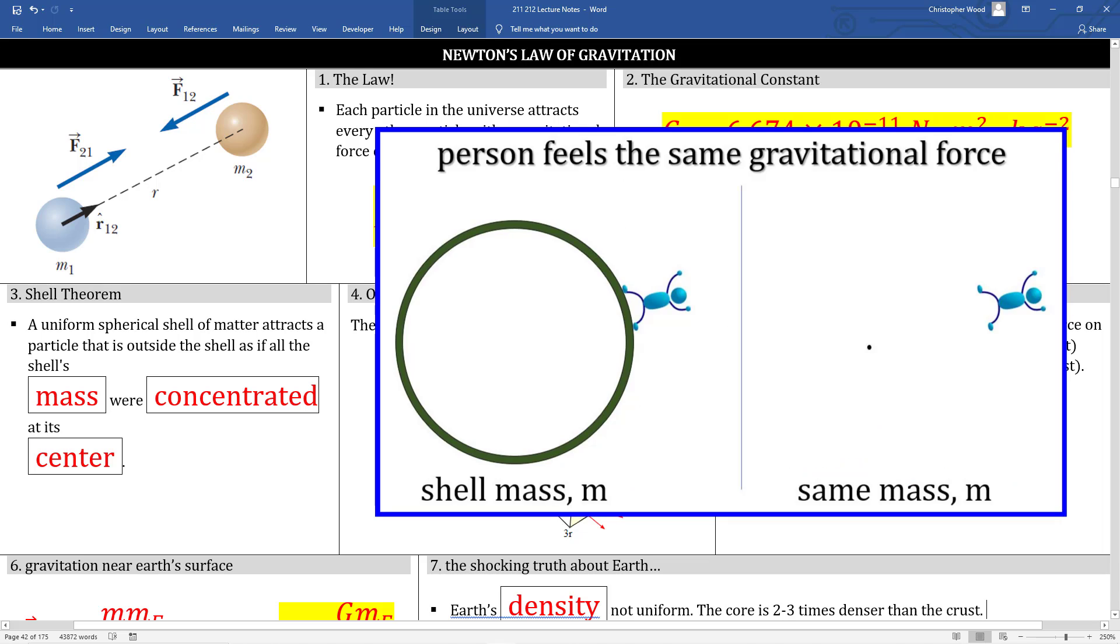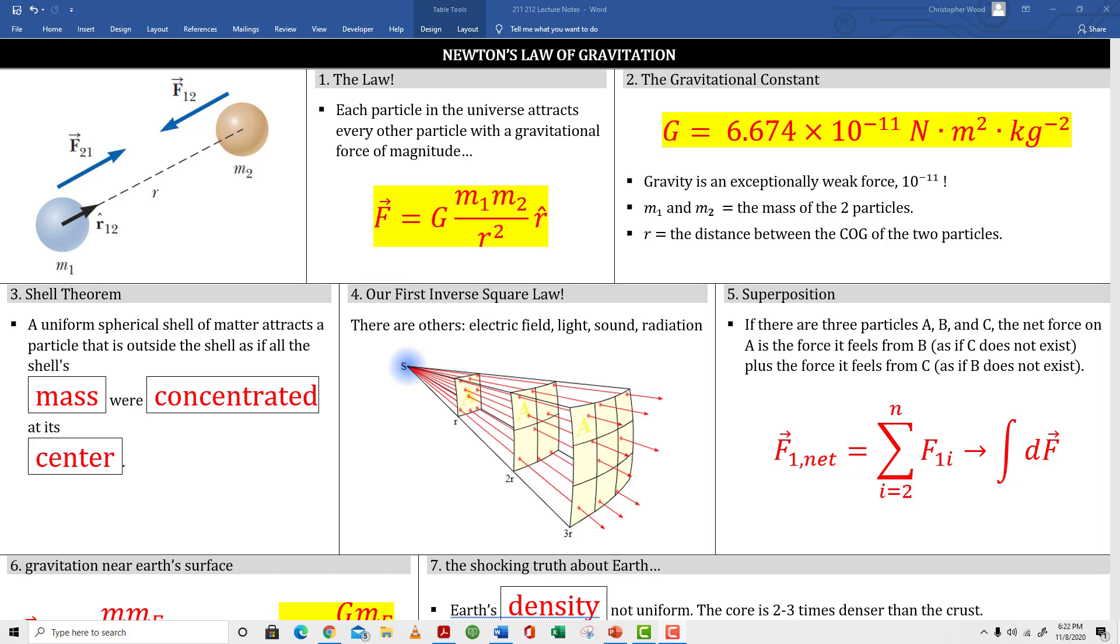Box 3, Shell Theorem. This is useful right now and also useful in the study of electrostatics. Box 4, this is our first inverse square law.